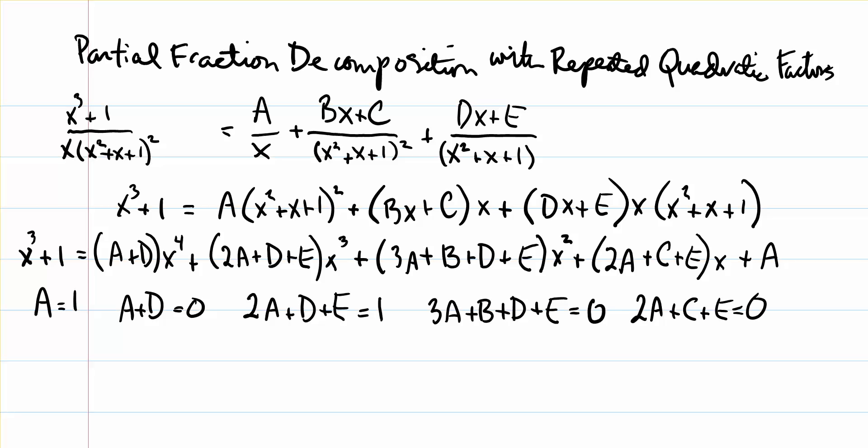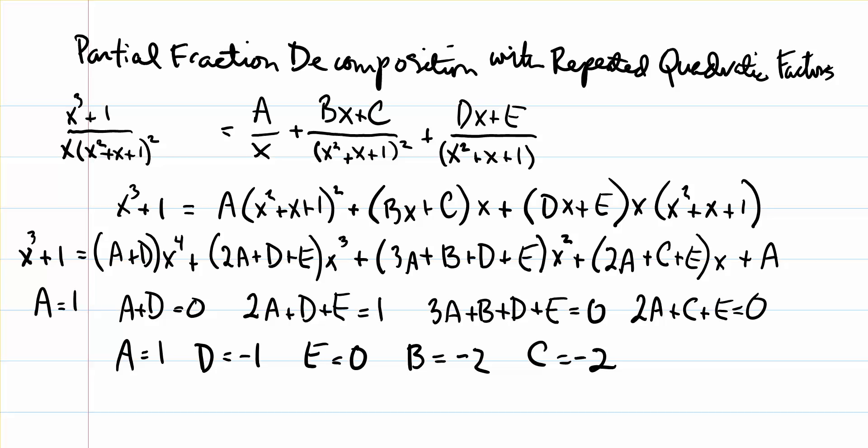Starting with A equals 1, which is the constant term that has to match the one on the left side of the equation, we can move from left to right: A equals 1, then we can solve for D using A plus D equals 0, then solve for E using 2A plus D plus E equals 1, then solve for B, and finally for C. I'll skip that whole process as it's pretty straightforward back-substitution — pause the video and work through it to verify.